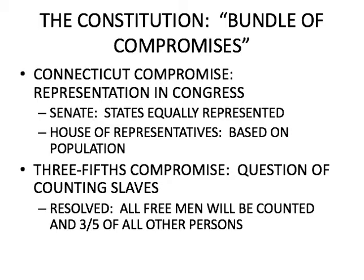They came up with the Three-Fifths Compromise, which was a question about counting slaves. A lot of slaves lived in the South, and Southerners wanted to count them towards their population so they'd have more representatives in the House. To resolve this, all free men would be counted as one, and three-fifths of all other persons — so a slave counted as three-fifths of a person toward the population.